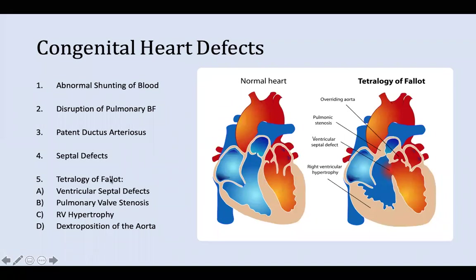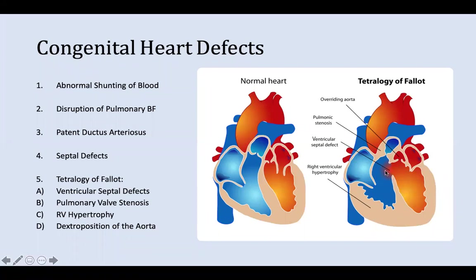Finally, in tetralogy of Fallot there are four defects: ventricular septal defect, pulmonary valve stenosis, right ventricular hypertrophy, and dextroposition of the aorta — meaning the aorta overrides the ventricular septal defect. Together they cause a right to left shunt, leading to cyanosis, fatigue, and respiratory failure.